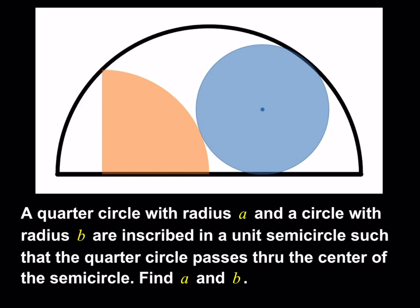We have a quarter circle with radius a and a circle with radius b, both inscribed in a unit semicircle with radius 1. The quarter circle passes through the center of the semicircle. This point here is the center of our semicircle, and we're supposed to find a and b.